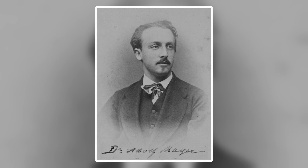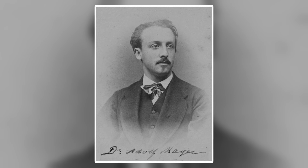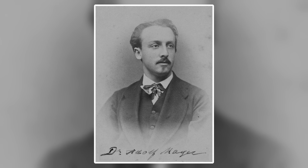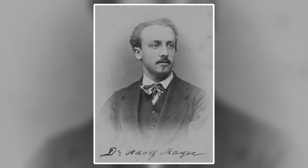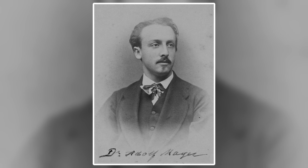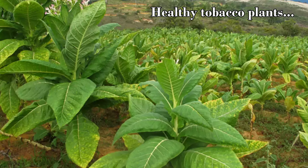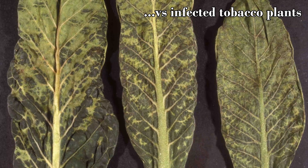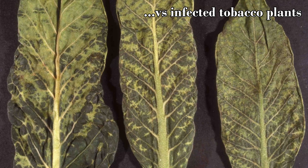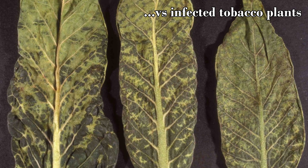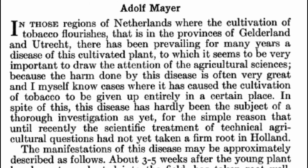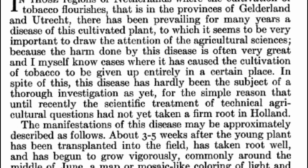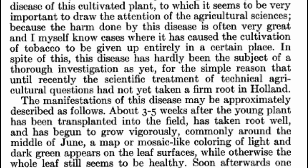In 1879, German agricultural biologist Adolf Meyer was given a request by Dutch farmers to investigate a certain disease that was affecting their tobacco plants. Symptoms these plants faced included stunted growth and development of a signature mosaic pattern of light and dark spots on the leaves. Meyer spent seven years researching this plant disease, publishing his findings in 1886.